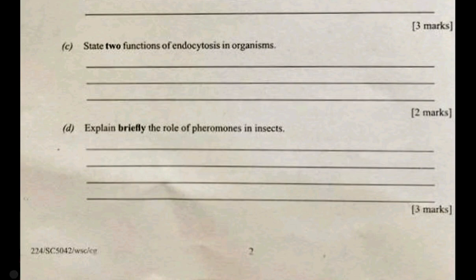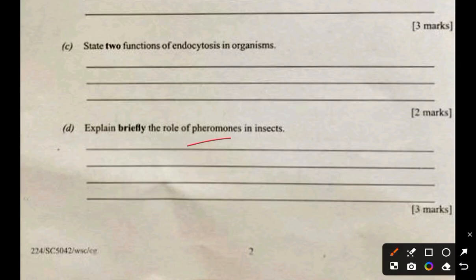Explain the role of pheromones in insects. Pheromones are chemical signals released to communicate with other members of the same species. They help in attraction of mates, marking territories, and coordinating behaviors. For example, when ants move in a trail following the same path, they are actually following pheromones that have been released along that path.